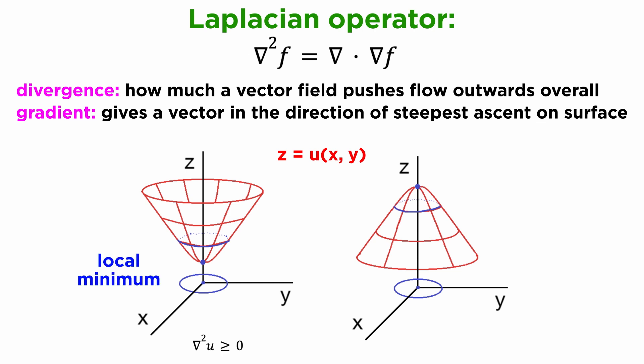So a positive Laplacian indicates a local minimum, while a negative Laplacian indicates a local maximum, although it is important to remember that these conditions are not sufficient to characterize stationary points, as we may recall from multivariable calculus, via the Hessian matrix, whose trace is the Laplacian.